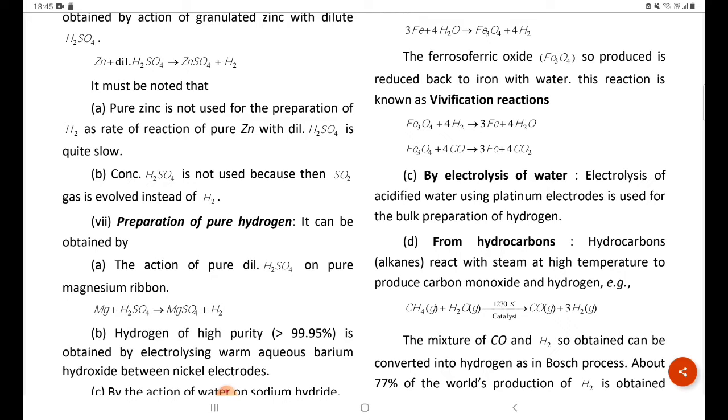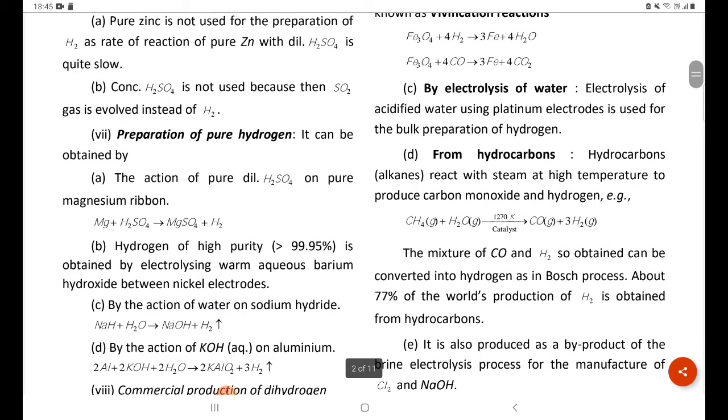From hydrocarbons: hydrocarbons, alkanes react with steam at high temperature to produce carbon monoxide and hydrogen. Example: CH4 plus H2O gives CO plus 3 H2.